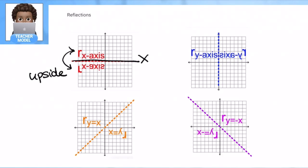This is our x-axis. So when we reflect over the x-axis, it just looks upside down. Versus the y-axis, our y-axis is up and down. So again, it just looks flipped.